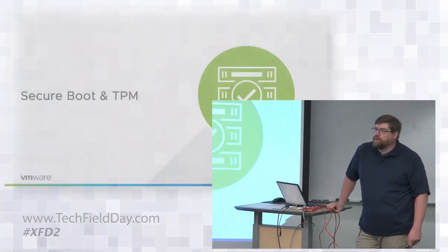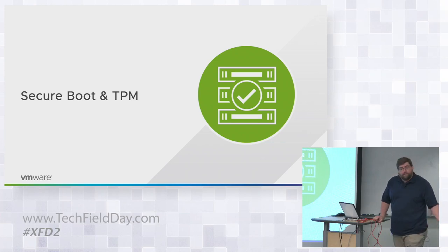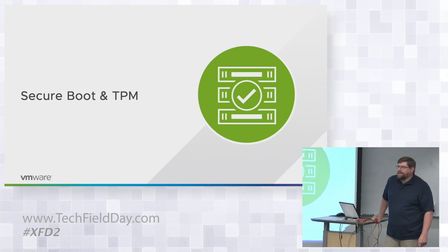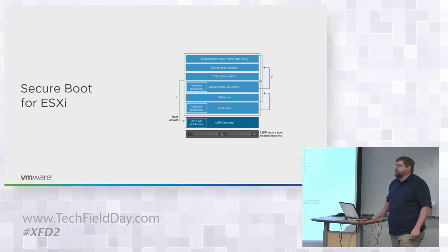Secure boot and TPM — order your hardware with TPMs, trusted platform modules. Secure boot is a cryptographic signing mechanism for the boot process — true for both VMs and for ESXi. When you install ESXi, it puts a key in the UEFI firmware — actually a Microsoft signing key, because they apparently got to all the hardware manufacturers first. Even Red Hat uses that now.